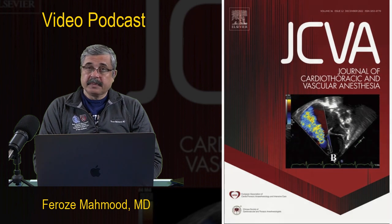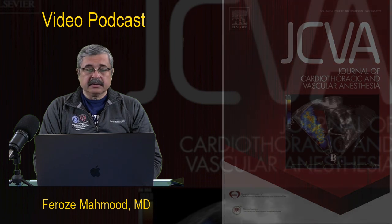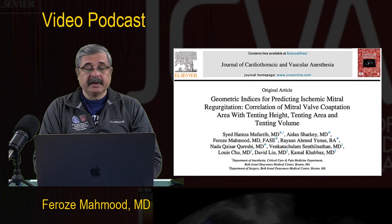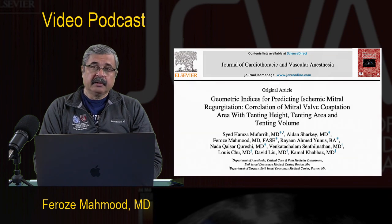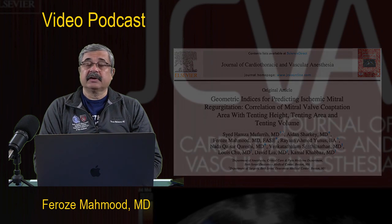As the first part of this video podcast, we have selected an article on geometric indices of predicting ischemic mitral regurgitation — correlation of mitral valve coaptation area with tenting height, tenting area, and tenting volume. We are going to be talking to one of the lead authors and asking pertinent questions that would be of interest to the readership and draw attention to this clinically significant research study.